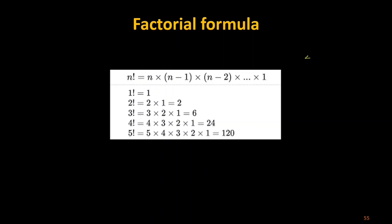For 4 factorial, it should be 4 × 3 × 2 × 1. So 4 × 3 is 12, multiplied by 2 is 24. Your output should be 24. But we are dealing with hexadecimal, so 24 has to be represented in hexadecimal. Using a hex calculator, 24 in hexadecimal is 18.